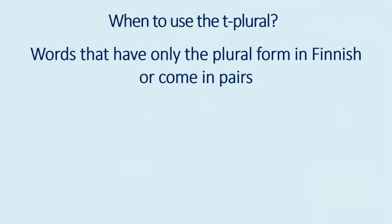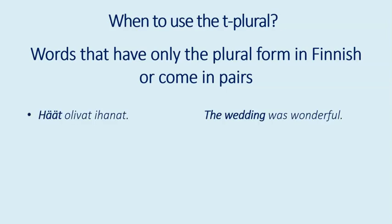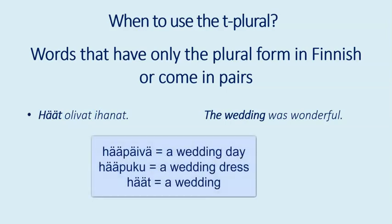T-plural is also used with words that have only the plural form in Finnish or that come in pairs. For example, häät olivat ihanat — the wedding was wonderful. Please note that unlike in English, the verb is in plural: häät olivat. We don't have the word hää in the meaning of a wedding — it's always häät. The word hää does exist in compound words such as häävpäivä, a wedding day, or hääpuku, a wedding dress.